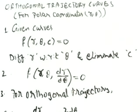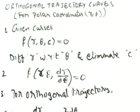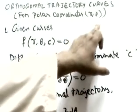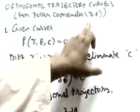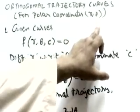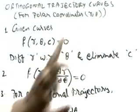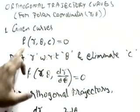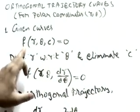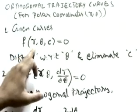In today's class we are going to do questions on orthogonal trajectories — specifically, to find the orthogonal trajectory of given curves when the curves are given in polar coordinates, in the form of r comma theta. Let me discuss first the procedure.